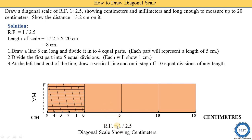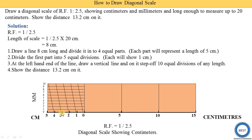We write down the representative fraction: RF = 1/2.5. The diagonal scale shows centimeters, with units in centimeters. To mark the distance of 13.2 centimeters: we indicate 0 to 10 centimeters on the main scale, then count 11, 12, 13 to get to 13 centimeters. To represent the remaining 0.2 centimeters, we move upward on the diagonal line to get one point — and that point indicates the 13.2 centimeter distance.